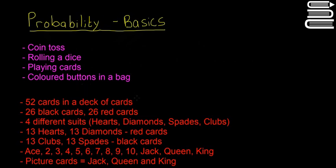So there are 52 cards in a deck of cards, 26 are black, 26 are red. There are four different suits: hearts, diamonds, spades, and clubs. There are 13 hearts and 13 diamonds, so that makes up the 26 red cards. There are 13 clubs and 13 spades that makes up the black cards. The numbers on them or the order is ace, 2, 3, 4, 5, 6, 7, 8, 9, 10, and then jack, queen, and king. The picture cards are jack, queen, and king. So that's all the deck of cards. You kind of have to know that off by heart for the exam because they expect you to know it.